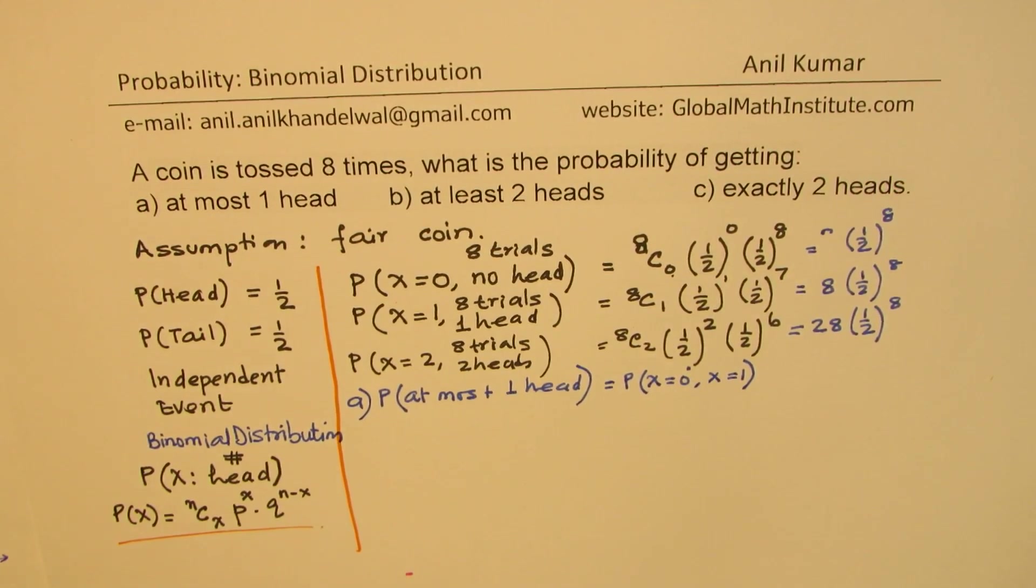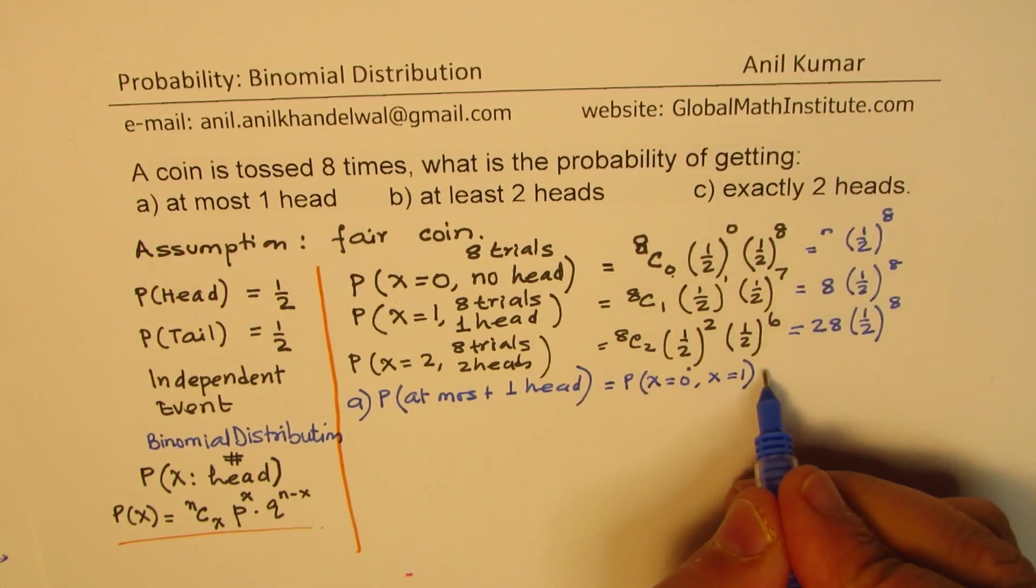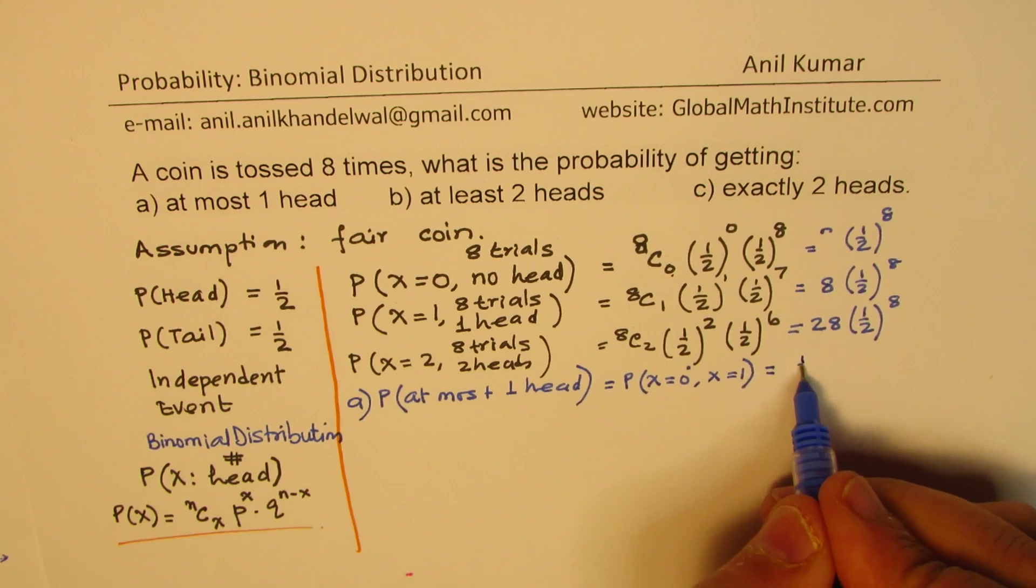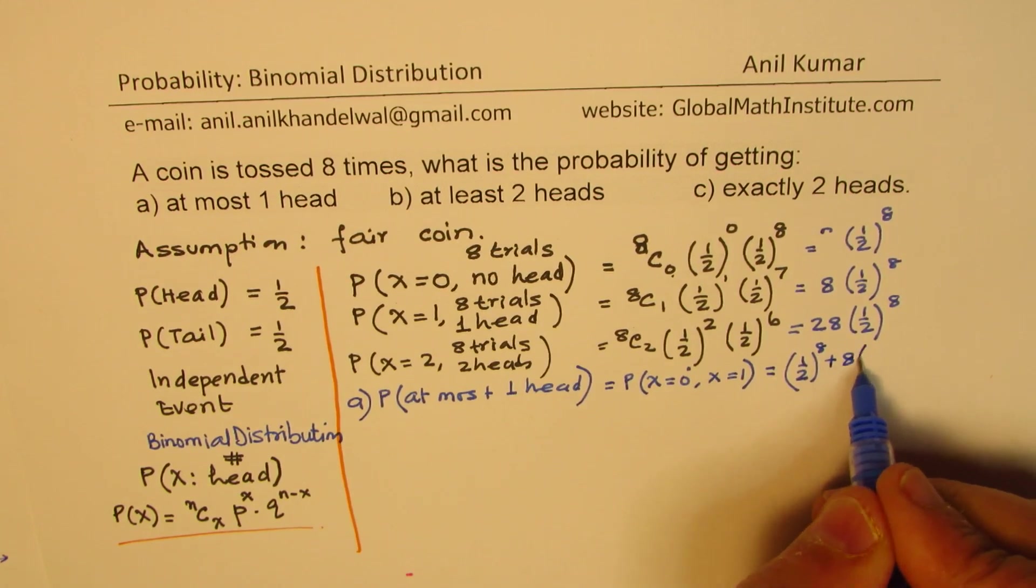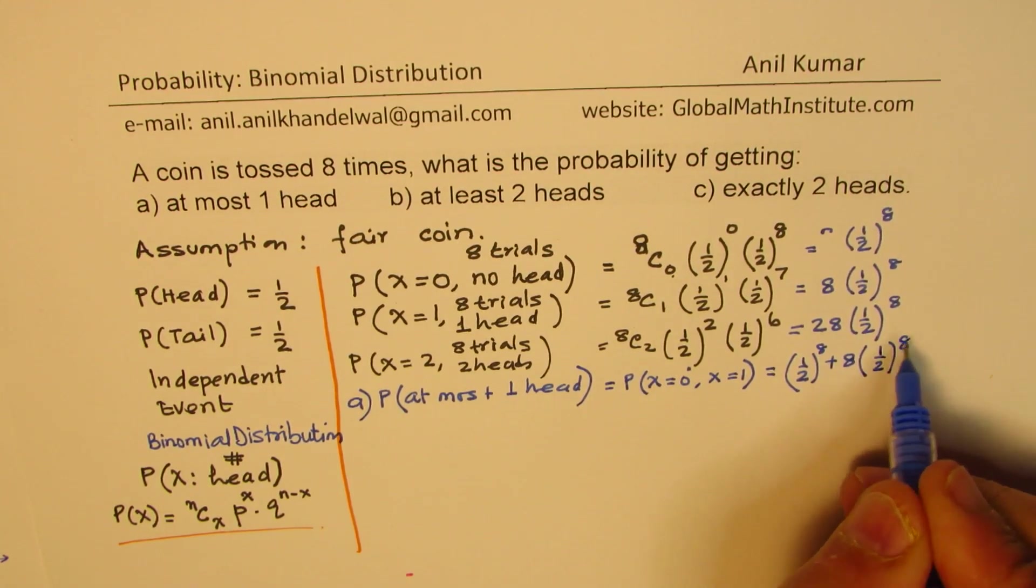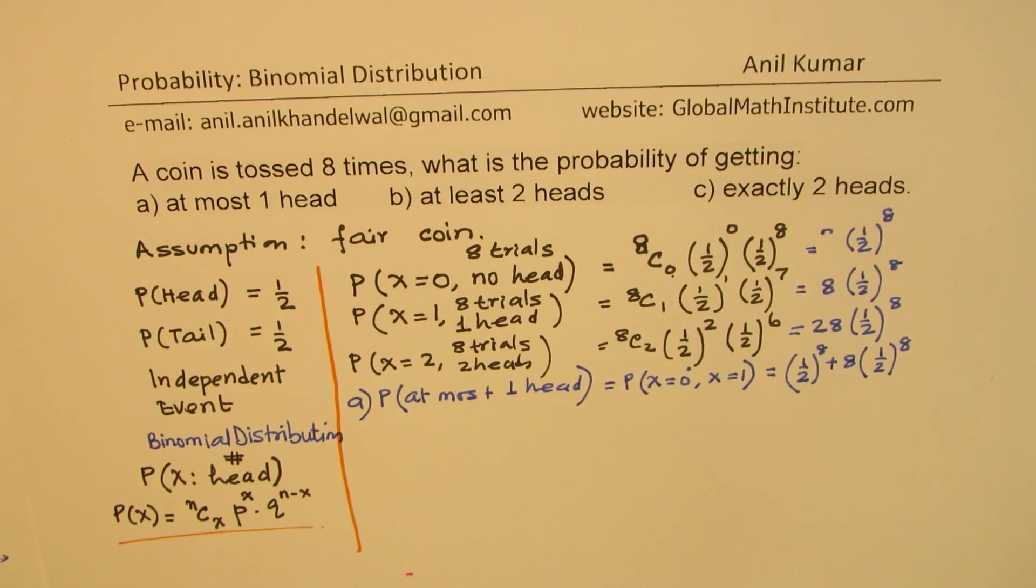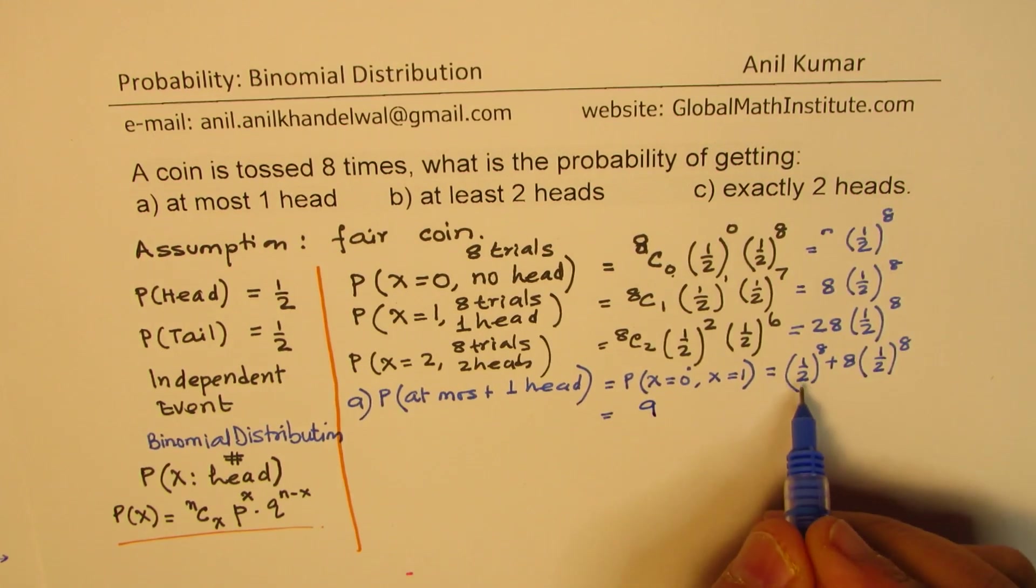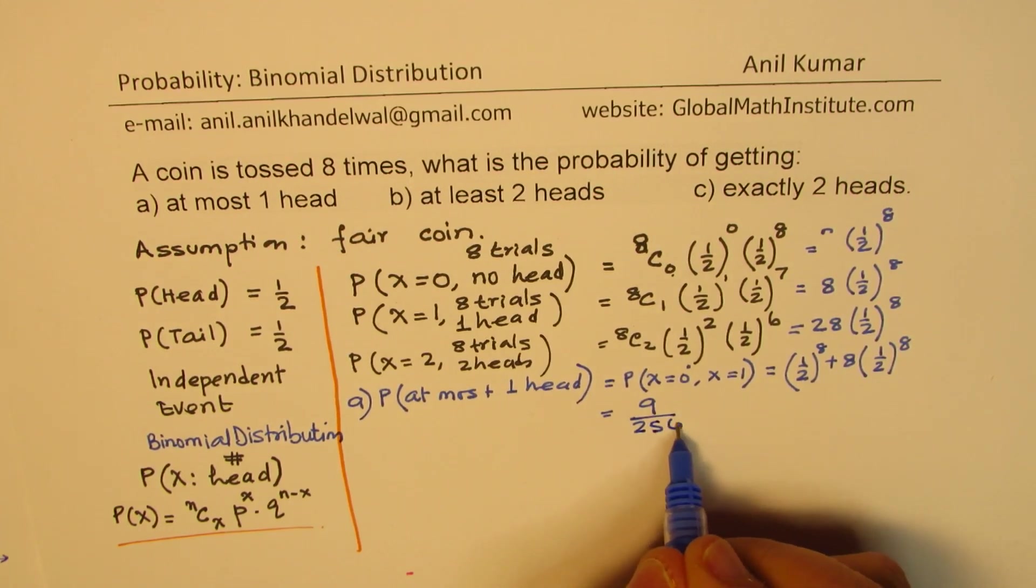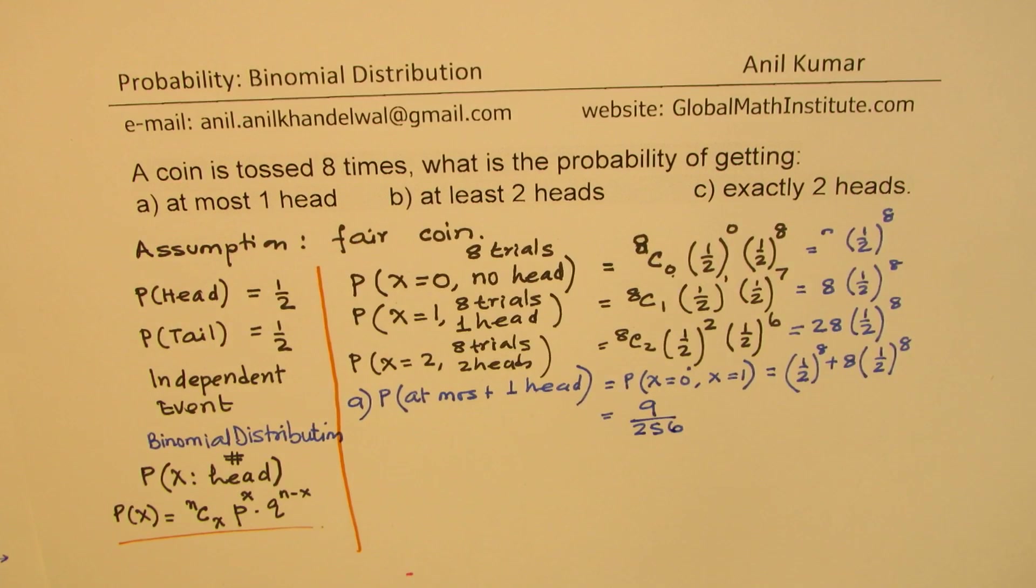So at most one. So that means we'll add the first two. So no heads and the probability of getting one head. So we are going to add the first two. So what we get here is half to the power of eight plus eight times half to the power of eight. Is that clear? So that is going to be the answer of part A. So that is nine, eight plus one is nine, and half to the power of eight is 256. So we get nine over 256. Is that clear?